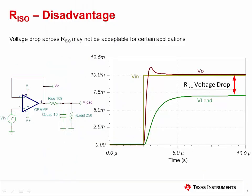In the previous video, we learned about the R-ISO compensation method. While the R-ISO method is simple, the voltage drop across the R-ISO element can make it impractical for some precision applications.